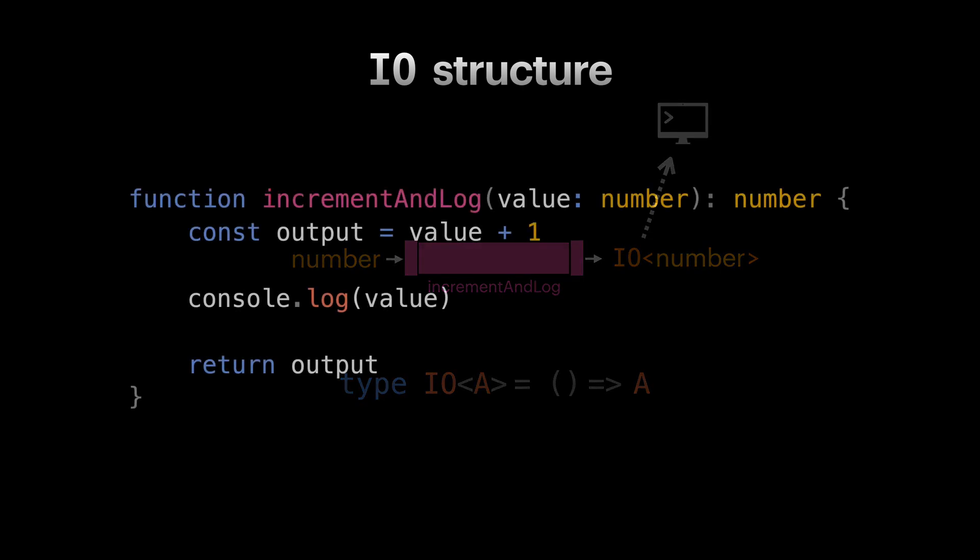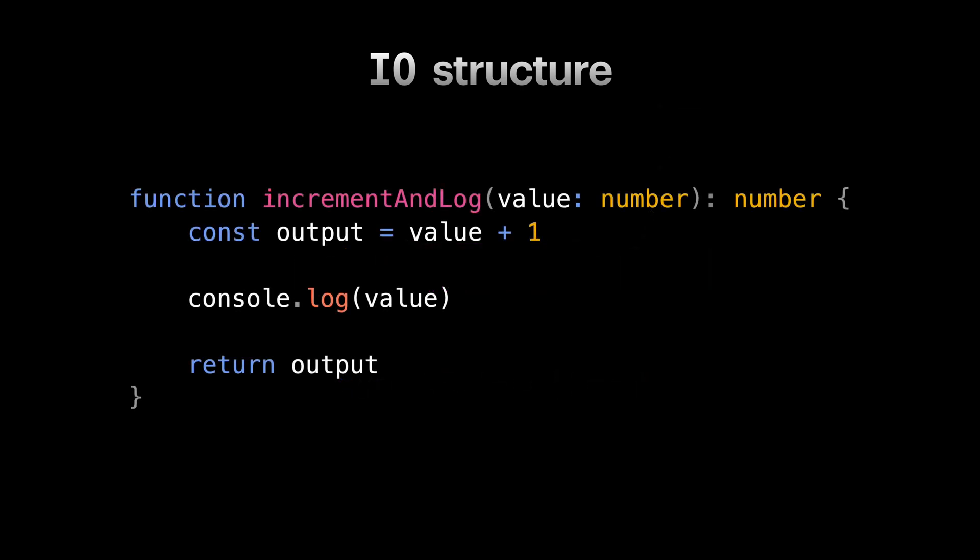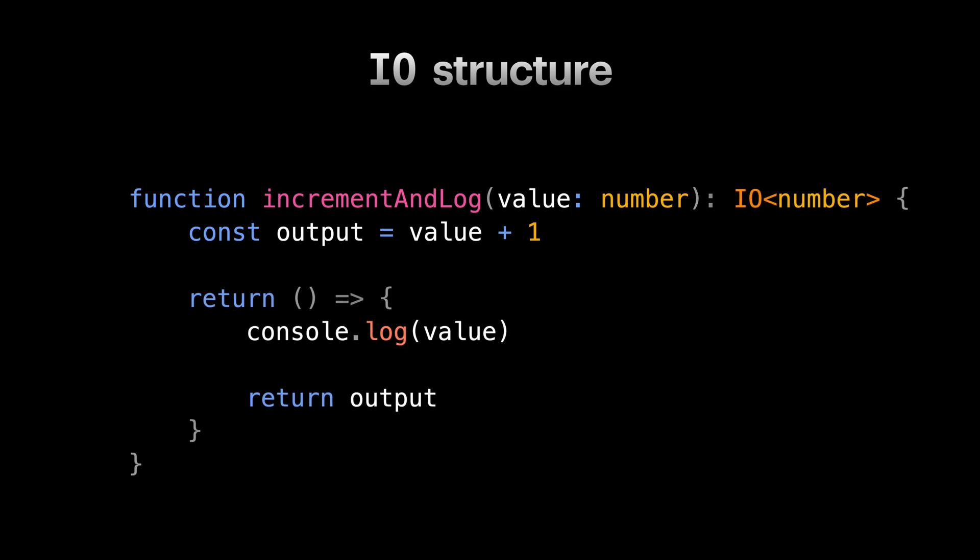Just to see some code, if our incrementAndLog function looked like this, and we want to rewrite it using IO to make it pure, it would look something like this. Well, you might say although we made our incrementAndLog function pure, but I'm not completely confident that I can design my applications using IO. It feels not easy to compose functions when we're dealing with IO.